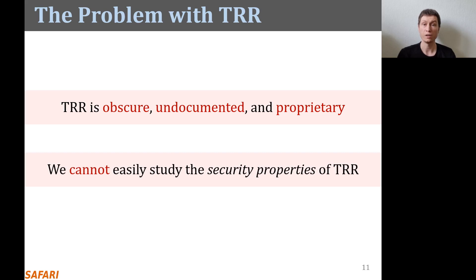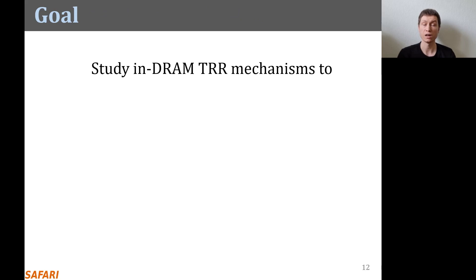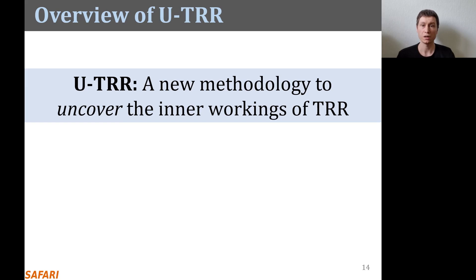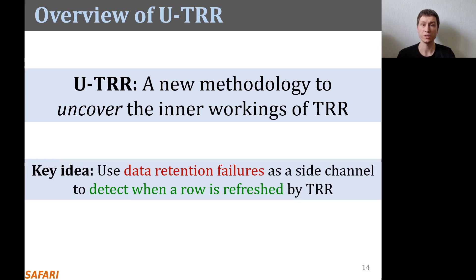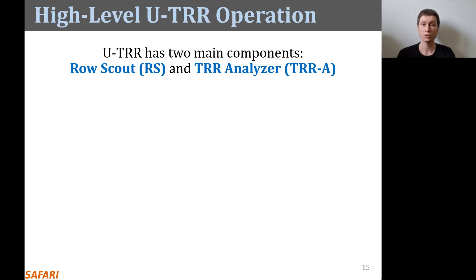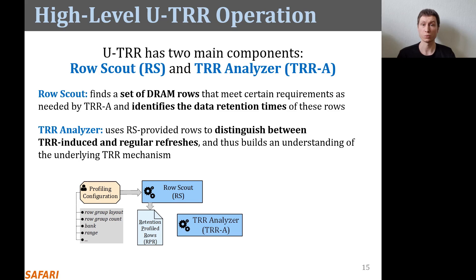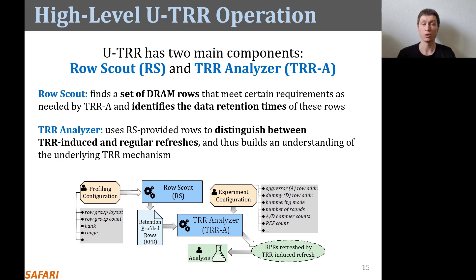Our goal is to study in-DRAM TRR mechanisms to understand how they operate, assess their security, and secure DRAM completely against RowHammer. We propose UTRR, a new methodology to uncover the inner workings of TRR. The key idea of UTRR is to use data retention failures in DRAM as a side channel to detect when a certain row is refreshed by TRR. UTRR consists of two main components: Rolescout and TRR analyzer. Rolescout finds a set of DRAM rows that meet certain requirements and identifies their data retention times. TRR analyzer uses those rows to distinguish between TRR-induced and regular refreshes, and builds an understanding of the underlying TRR mechanism.